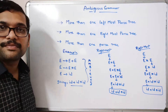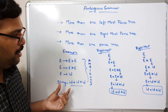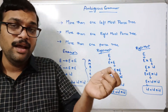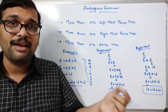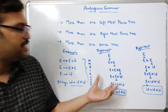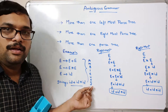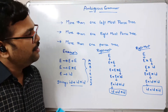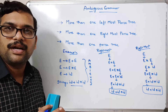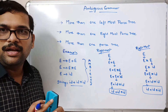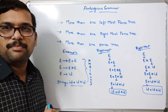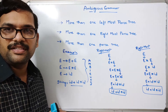Hopefully you understood: if you consider any grammar and a given string is derived with more than one leftmost or rightmost derivation, we call it an ambiguous grammar. If you have any doubts, post them in the comment section and I'll clarify. If you enjoyed this session, like, share with your friends, and don't forget to subscribe. Thanks for watching!